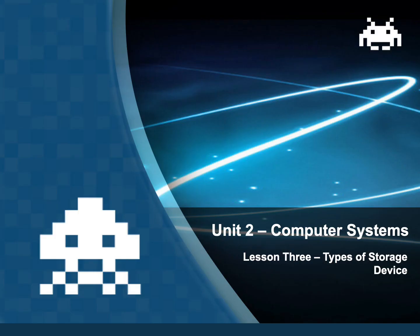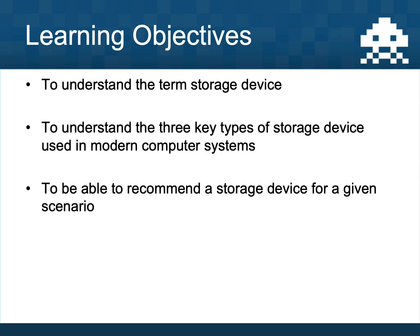This is lesson three of the Year 7 Unit 2 computer systems unit, and this unit is looking at types of storage device, which was Archie's left leg. By the end of this lesson you will understand the term storage device, the three different types of storage device used in modern computer systems, and be able to recommend a storage device for a given scenario.